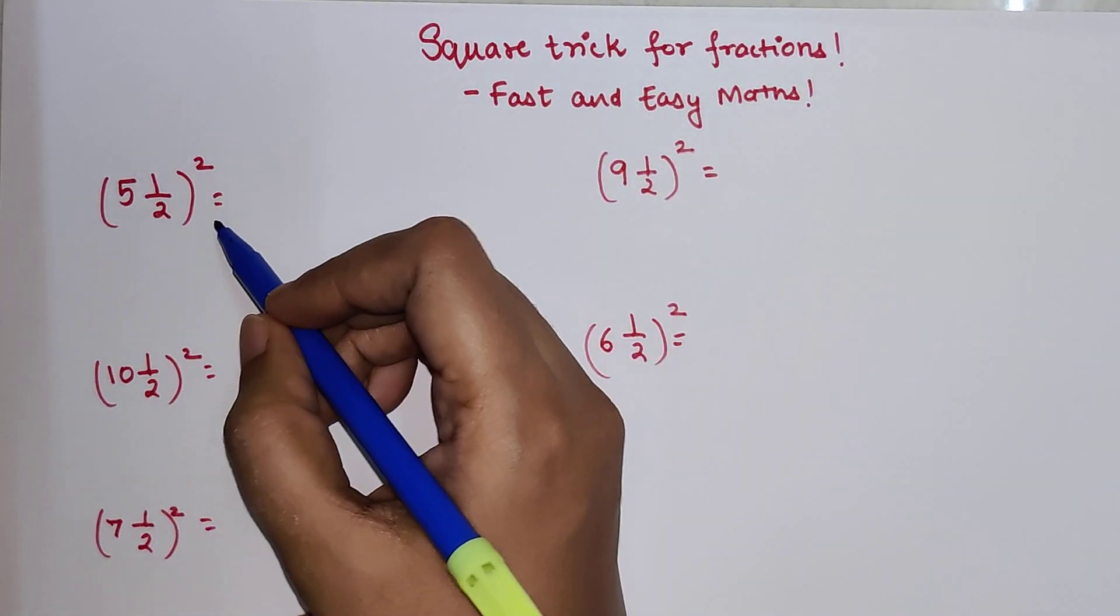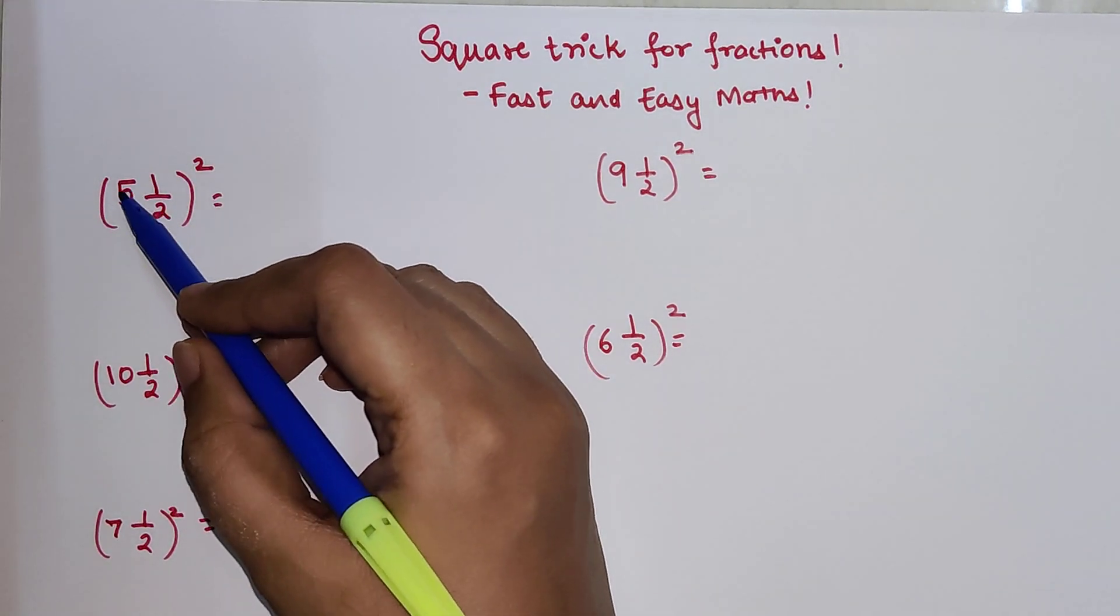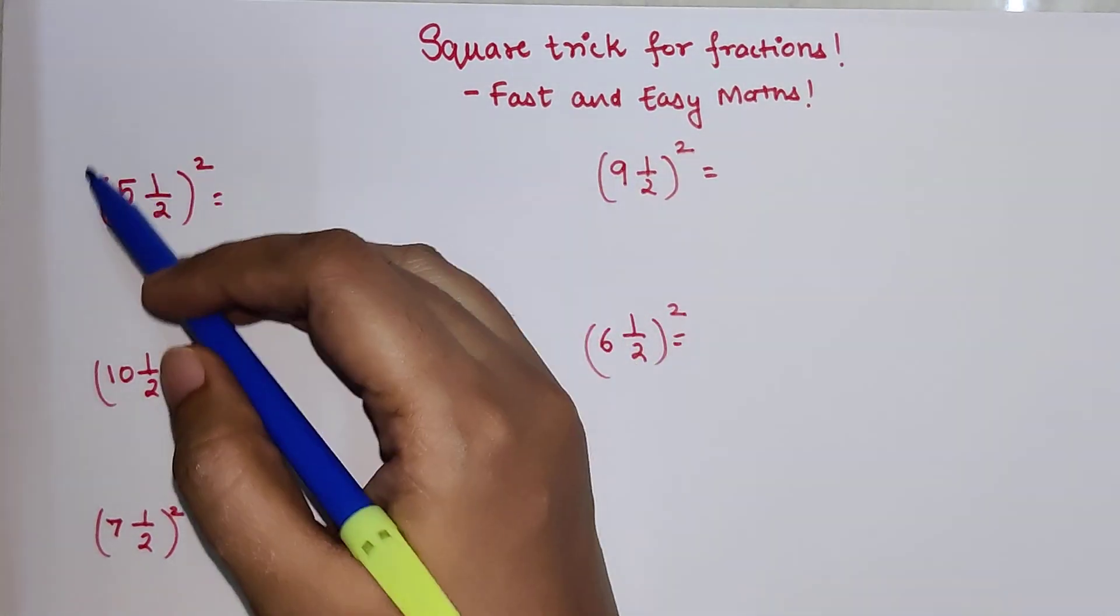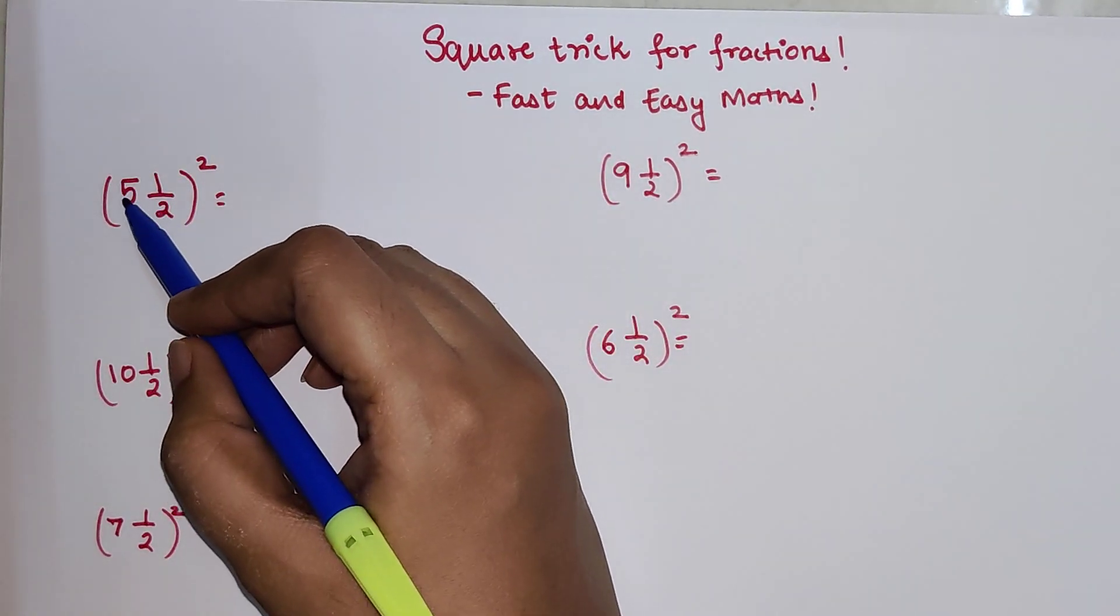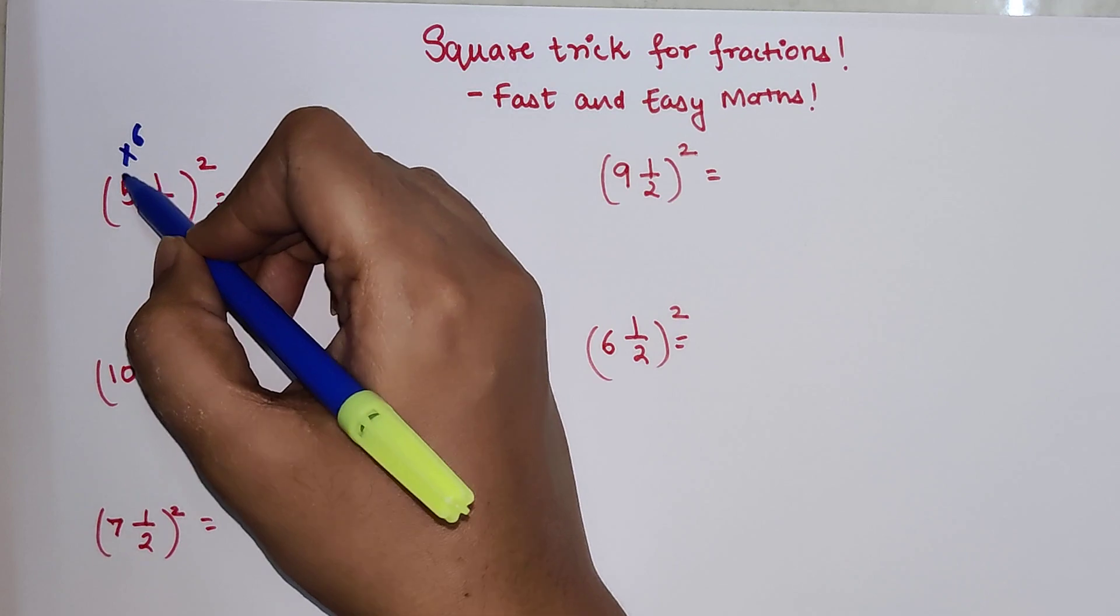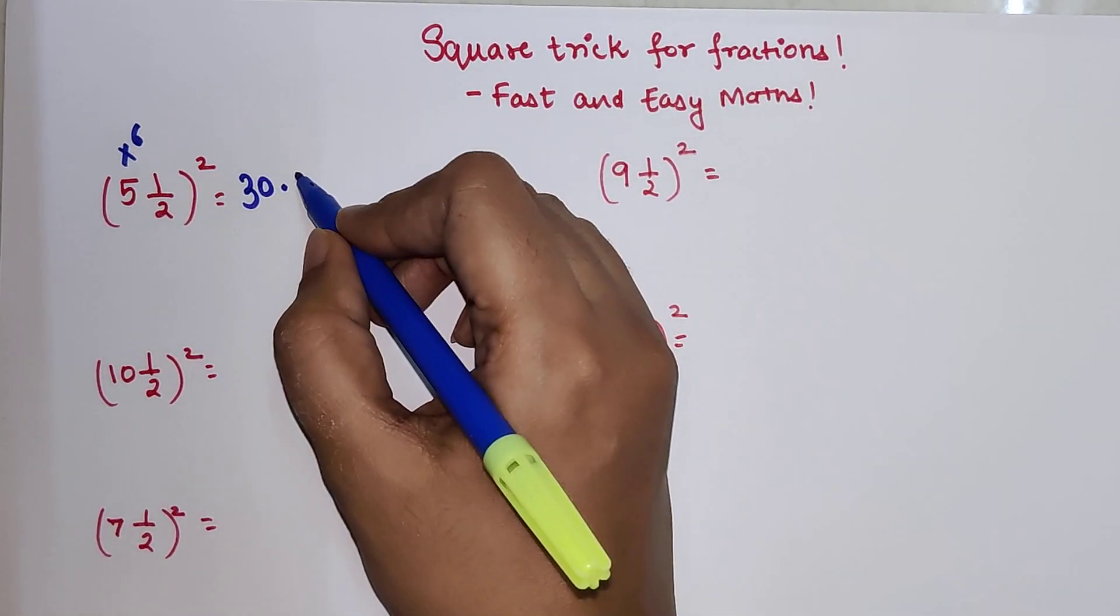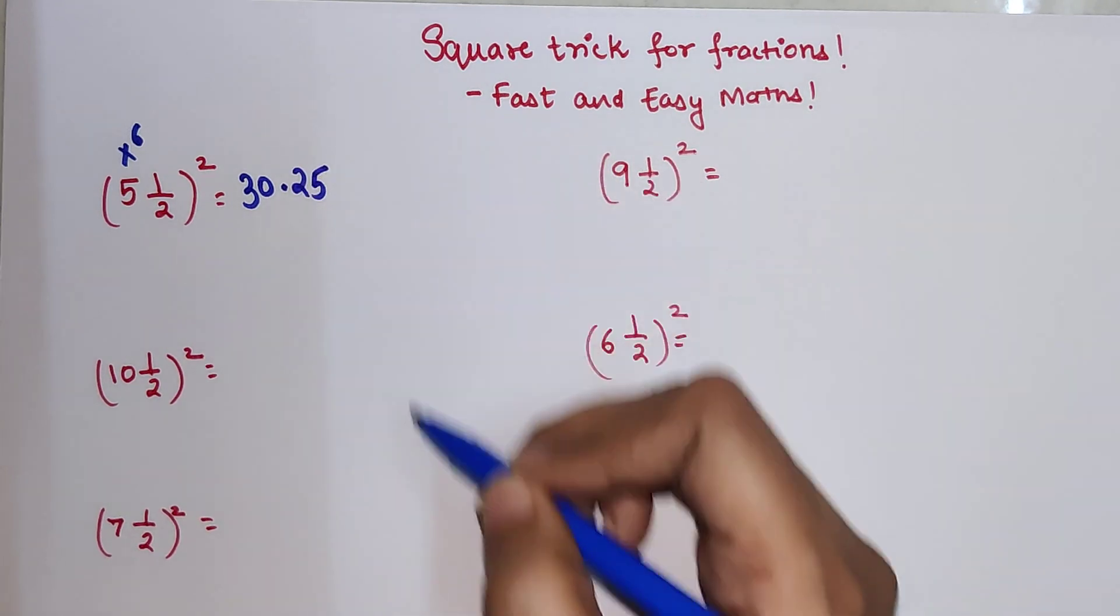The first thing, what you should do is multiply the integer part with the number which is coming next to it. So the number which is coming after 5 is 6. So you are going to multiply 5 and 6. So your answer is going to be 30.25.